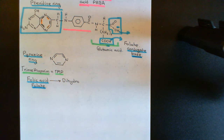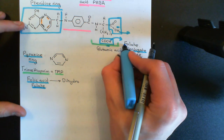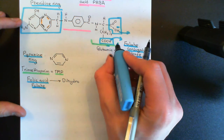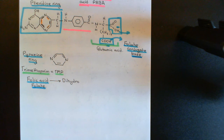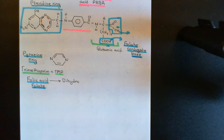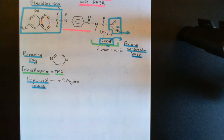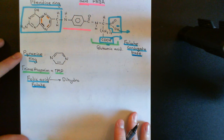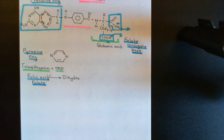So folate is just the name for the folic acid molecule once it's donated its protons away into solution. Under physiological pH, a lot of the folic acid molecules will donate their protons into solution and therefore exist as folate molecules rather than folic acid molecules, which is why people often talk about folate rather than folic acid. To all extents and purposes, folic acid and folate are the same molecule — two sides of the same coin.